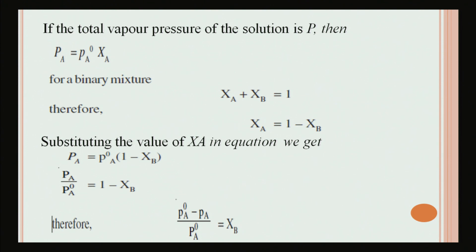If the total vapor pressure of the solution is P, then P_A = P°_A · X_A. For a binary mixture, X_A + X_B = 1, so X_A = 1 − X_B. Substituting this value: P_A = P°_A · (1 − X_B). Rearranging, P_A / P°_A = 1 − X_B. Therefore, (P°_A − P_A) / P°_A = X_B.